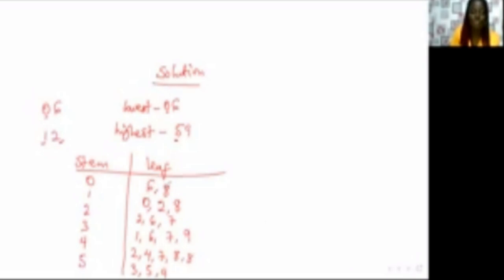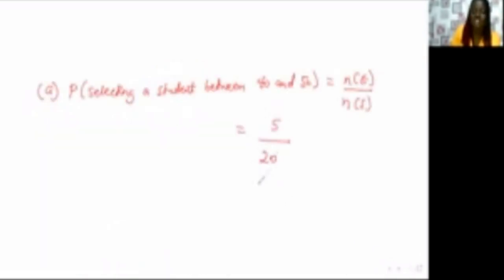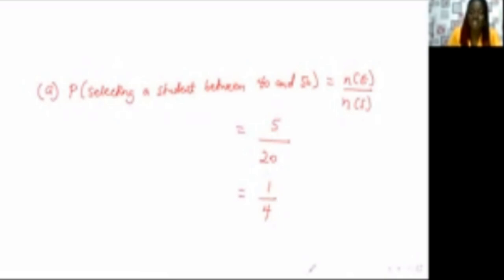Over what is the sample space? The overall sample space is 20 students total. So the probability is 5/20, which simplifies to 1/4. That is the probability of selecting a student between 40 and 50. If similar questions are asked, count the number of values in the range, then divide by the total number of values.